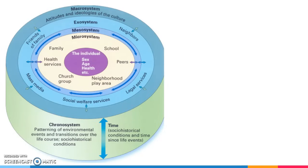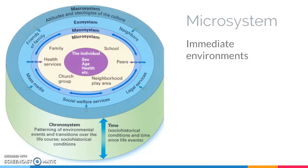But then we get to what's usually listed as the first level of his theory, which is the microsystem. And these are your immediate environments. So for a child this could be their school, their peers, or their family — who do they live with or interact with and what is their relationship with those people. Do they have supportive teachers, is the parent feeling stressed out by money, are the parents fighting, is the child being bullied, and so on. And for adults your microsystem might include your job, or this class, or the place where you live.